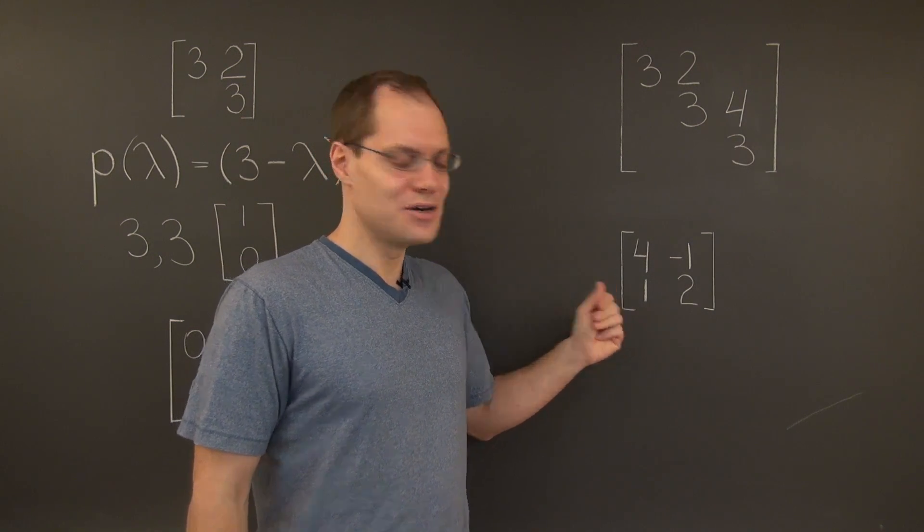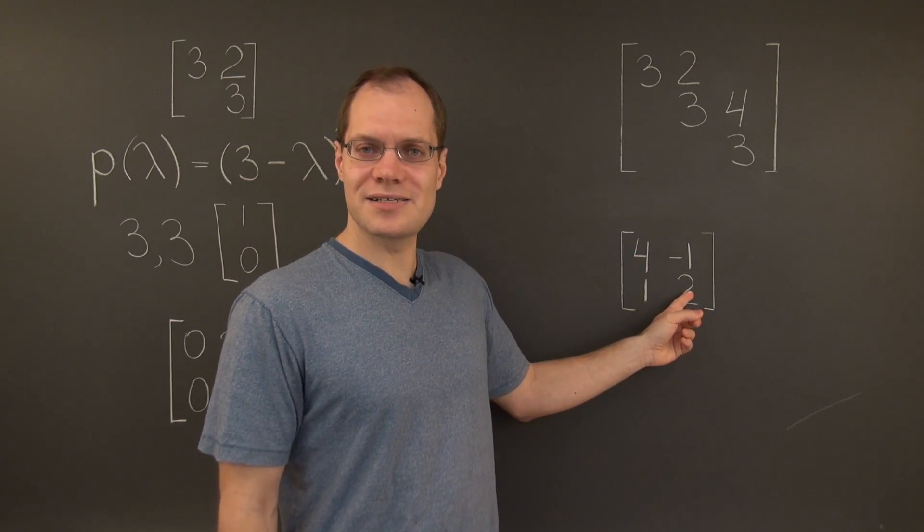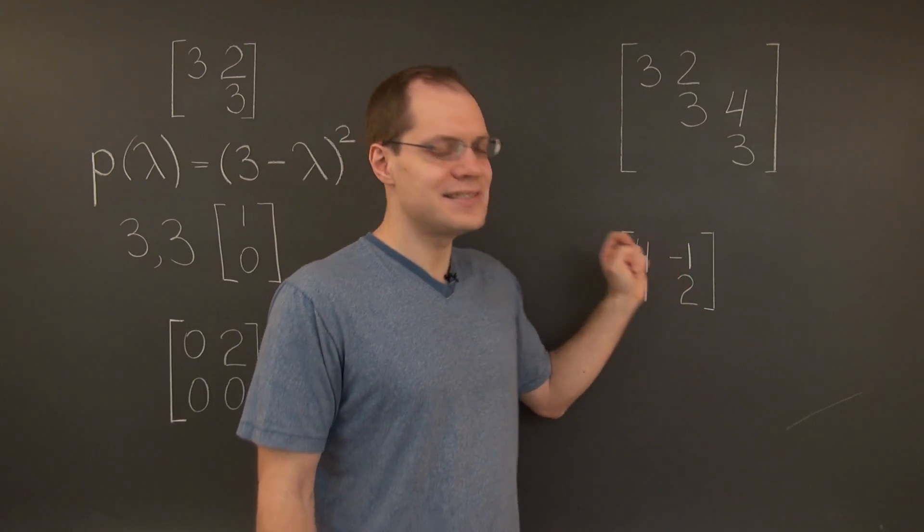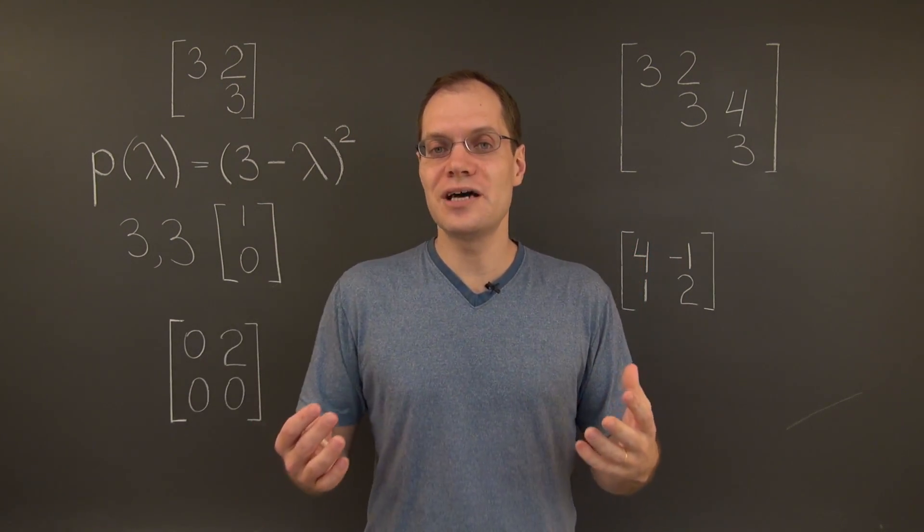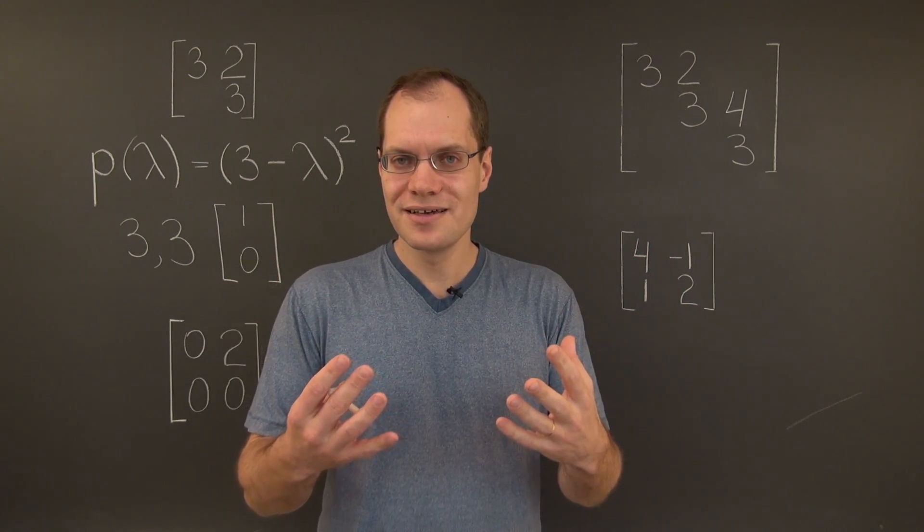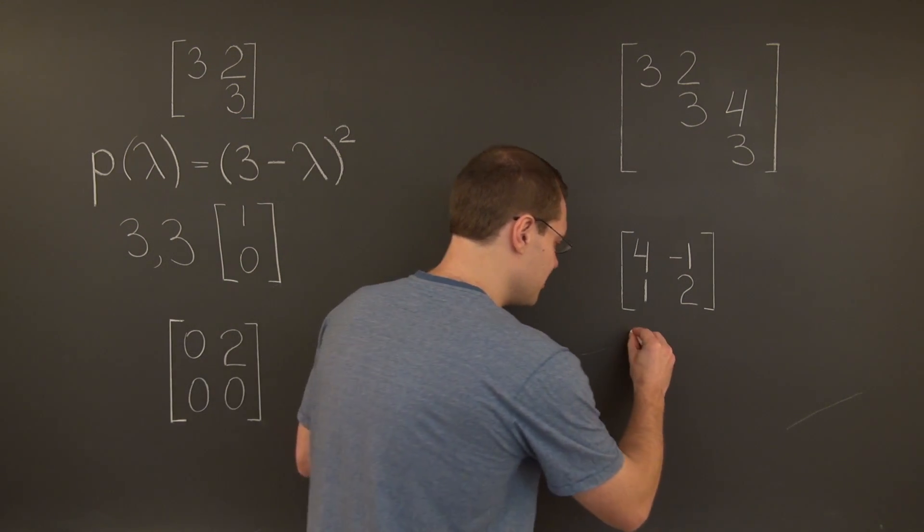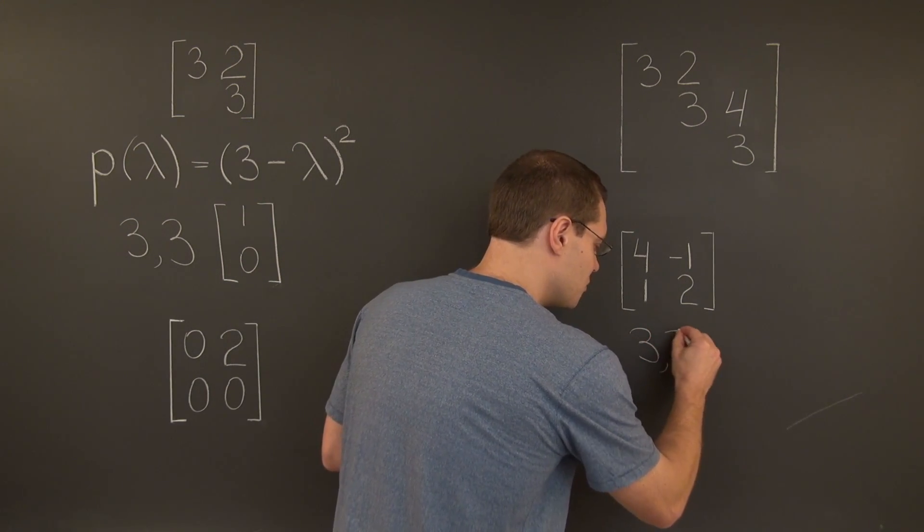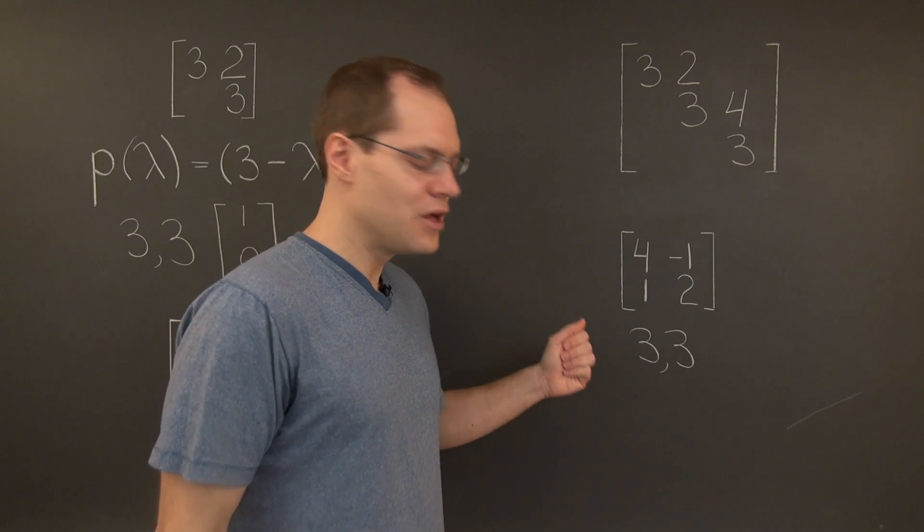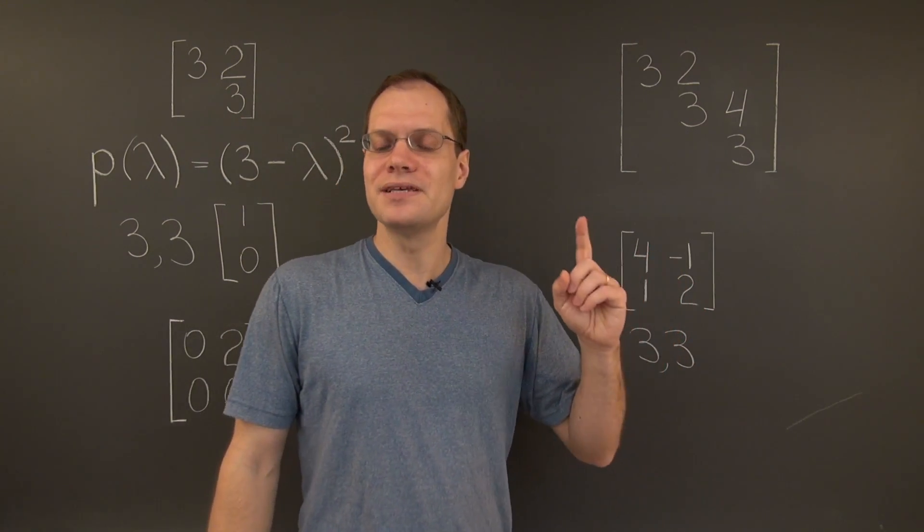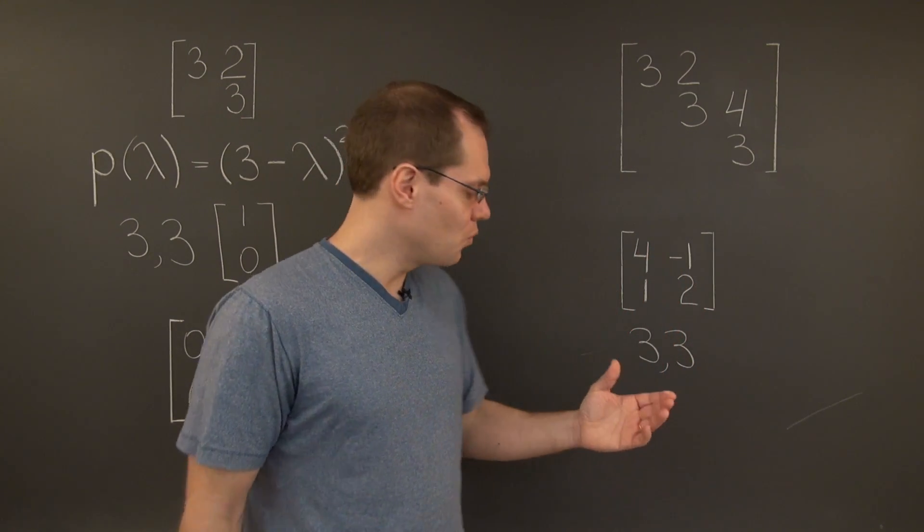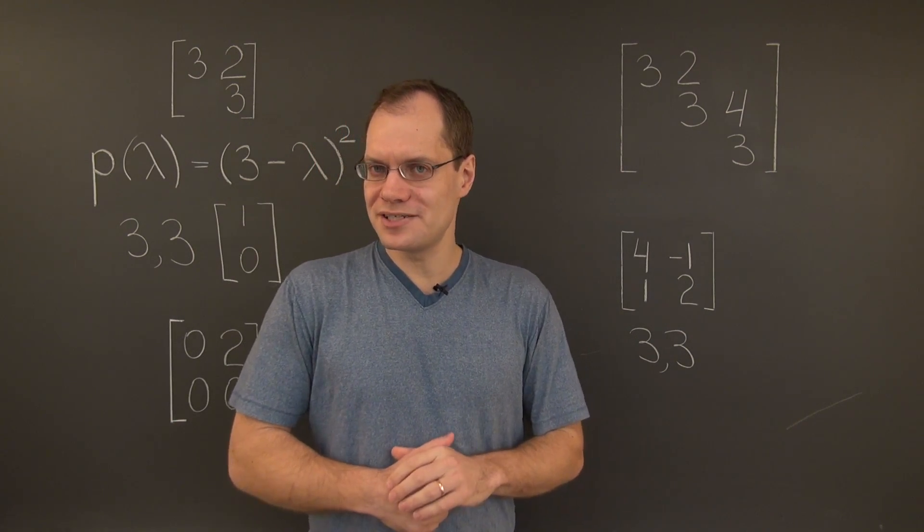What are its eigenvalues? Well, its trace is 6, and its determinant is 9. So, we're looking for two numbers that add up to 6, and multiply to 9. And, of course, it's once again 3 and 3. So, 3 will once again be an eigenvalue of algebraic multiplicity 2.